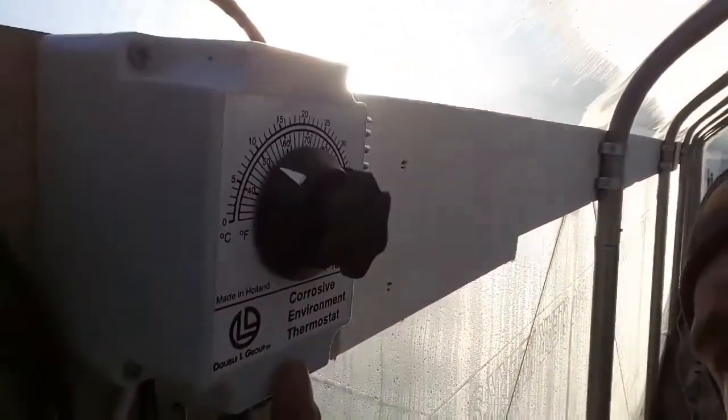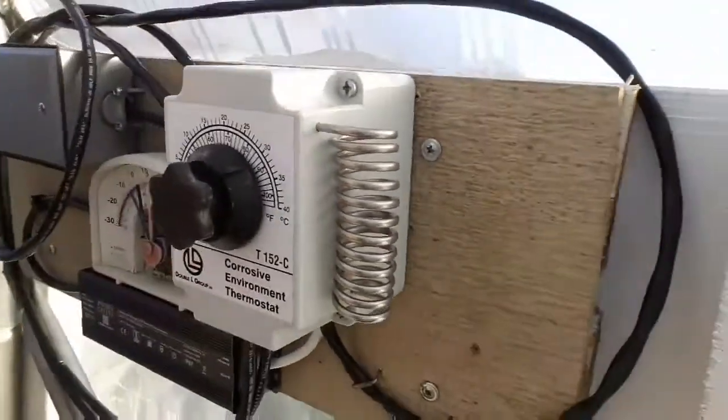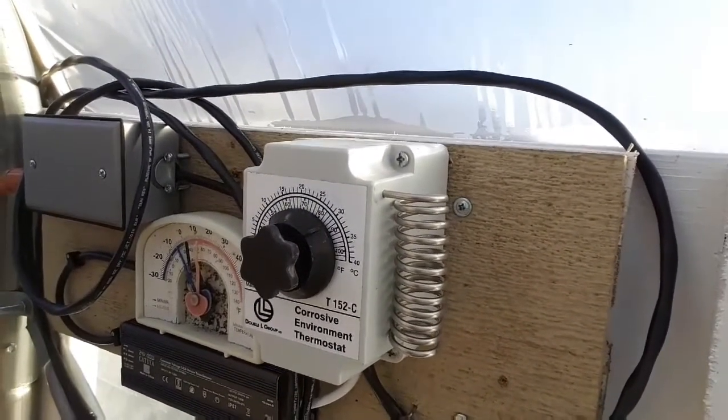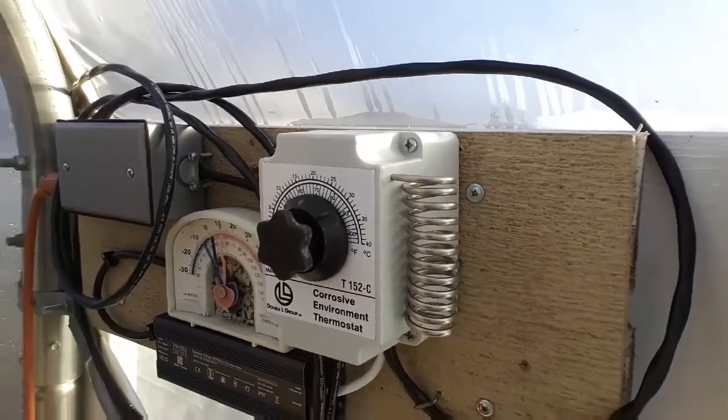This is the controller right here. Get around this way on it. There we go. It's a 152-C double L group thermostat controller. So let me show you what I figured out.